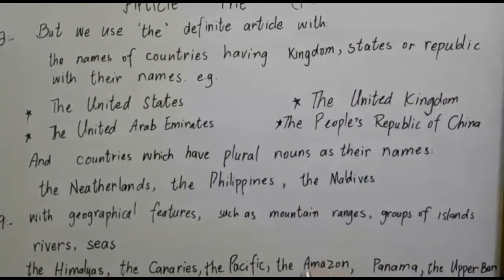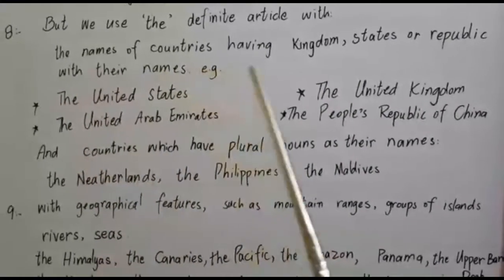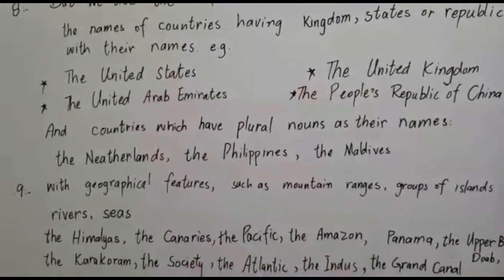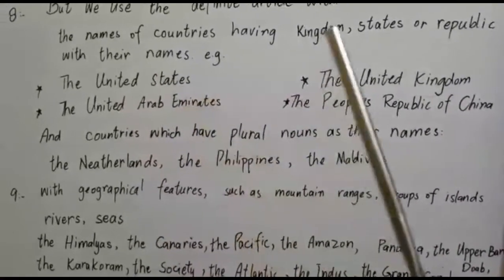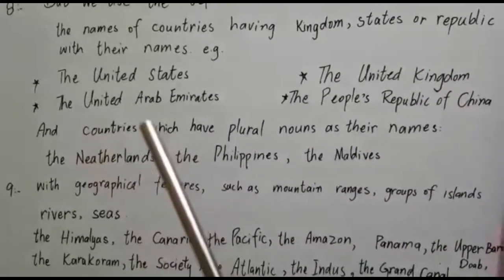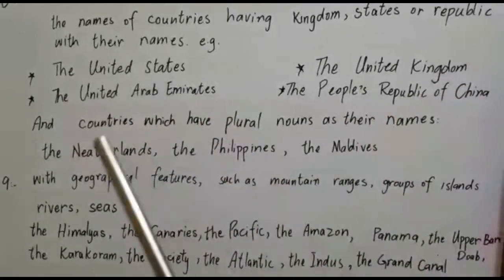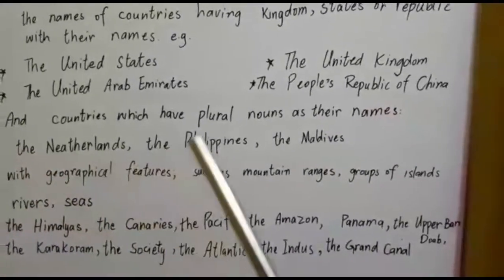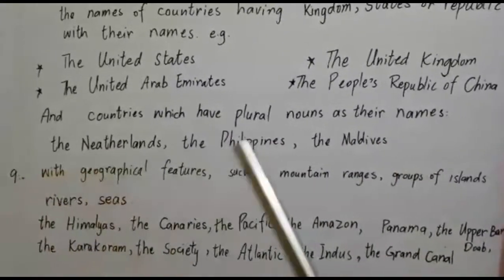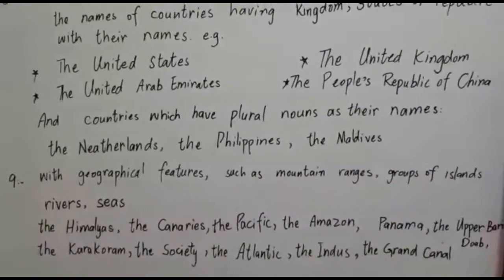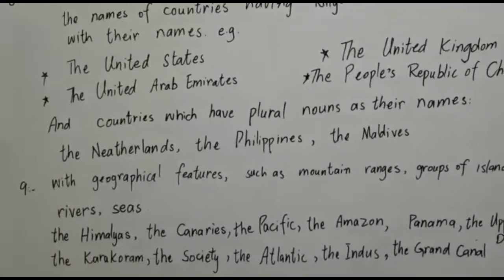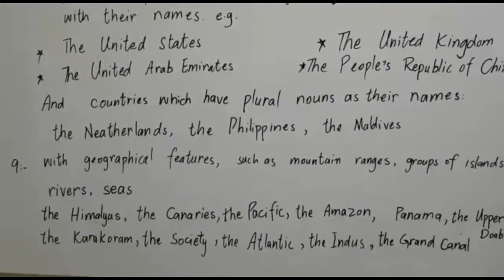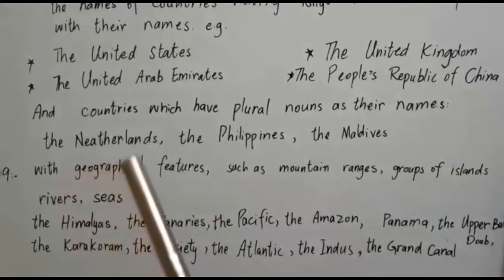However, we do use the definite article 'the' with names of countries that include words like 'kingdom', 'states', or 'republic'. For example: the United States, the United Kingdom, the United Arab Emirates, the People's Republic of China. We also use 'the' with countries whose names are plural nouns — for example: the Netherlands, the Philippines, the Maldives.